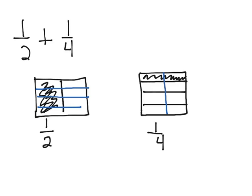Each model now has eight smaller units. There are four shaded units out of eight total units in the 1 half rectangle. So 1 half now becomes 4 eighths. And there are two shaded units out of eight total units in the 1 fourth rectangle. Therefore, 1 fourth becomes 2 eighths.